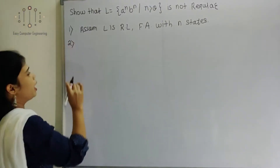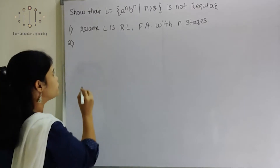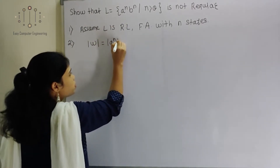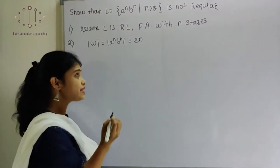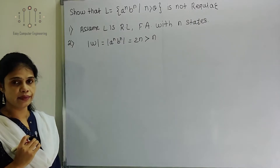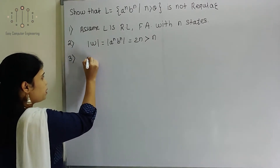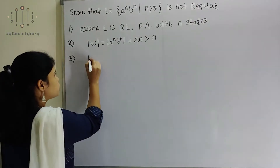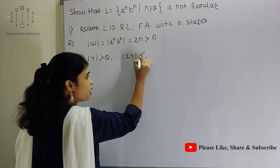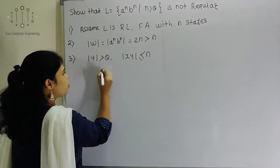We will prove this by contradiction. Second statement: let W = A^N B^N, so the length of W equals 2N, which is greater than N. As per the Pumping Lemma, the language string must have length greater than N. Third statement: by the Pumping Lemma there exist three expressions X, Y, Z where |Y| > 0, |XY| ≤ N, and X Y^i Z belongs to L for i ≥ 1.